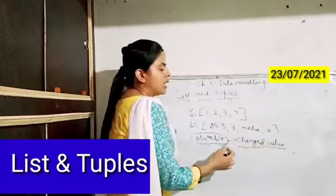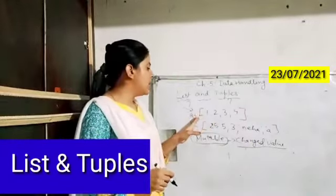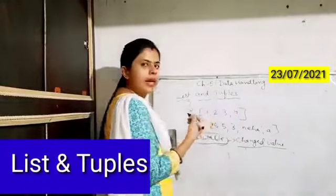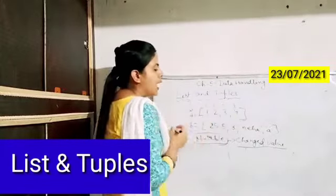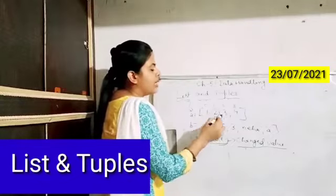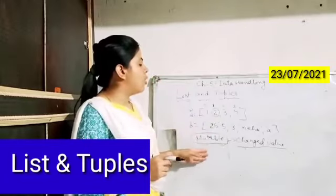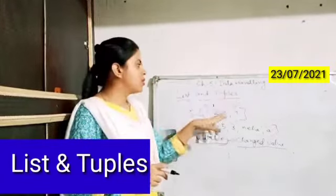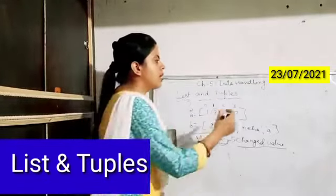Mutable means the values of a list can be changed easily using the position. If I define a list [1, 2, 3, 4], the indexing is 0, 1, 2, 3. I can change any value by specifying its index position. Moving forward, tuples are also a list of comma-separated values but they are represented in the form of parentheses.